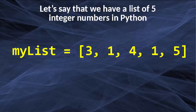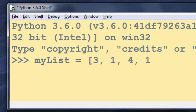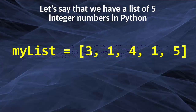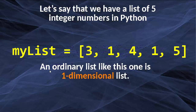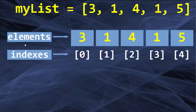For example, let's say that we have a list of five integer numbers in Python. Let's call it myList and populate it with a few integer numbers. I'm going to do that in my Python IDLE using the exact same numbers. As you can see, myList is an ordinary list in Python, and an ordinary list like this one is a one-dimensional list. We can represent this list as one dimension or one row. This list has elements 3, 1, 4, 1, 5 — it has five elements and the index of the first element is zero. The index of the second one is one, and so on, so the starting index is zero.